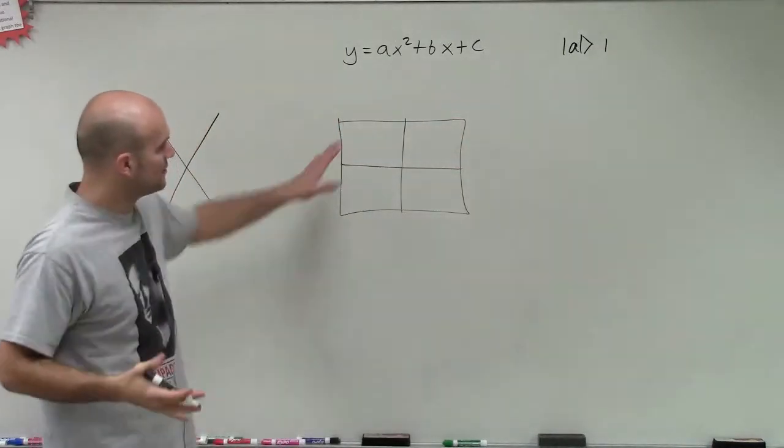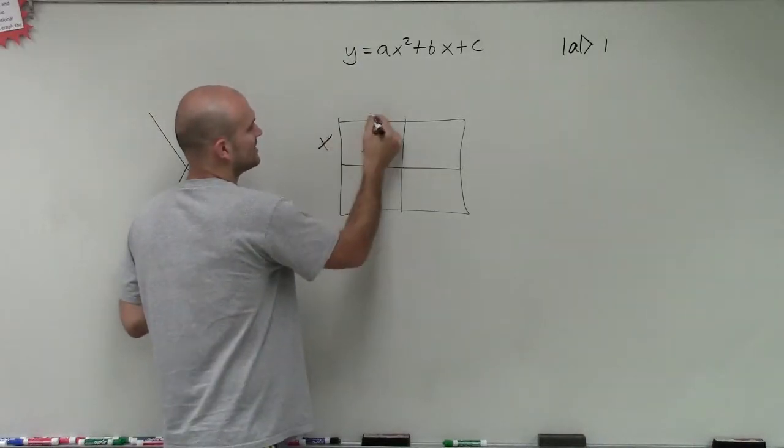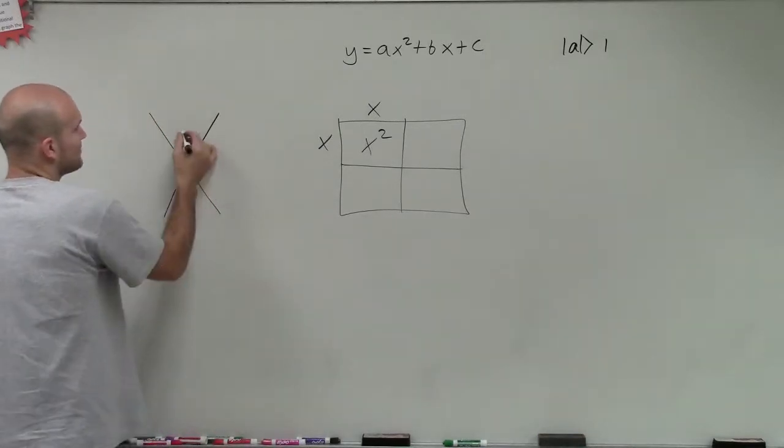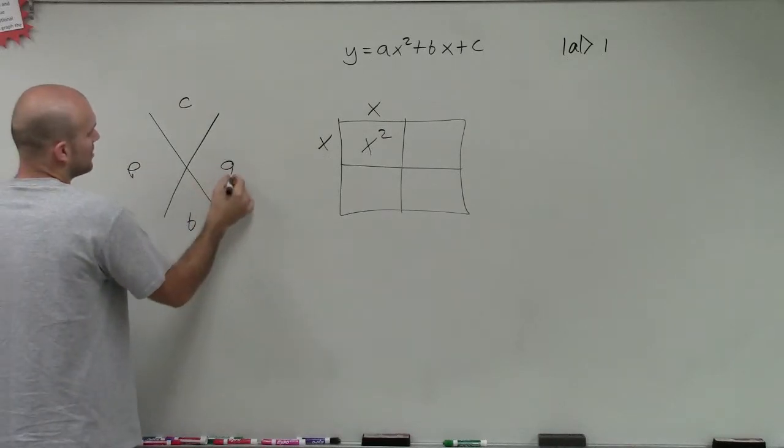But either way, what we have when we had the box technique, we had x squared where a was 1. So we knew that the side lengths here were x and x. Over here, we just took our c and our b. And we said this was c, this is our b, and this is our p and our q.